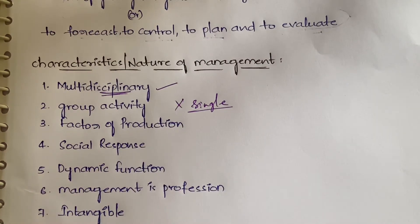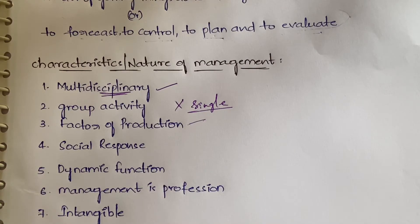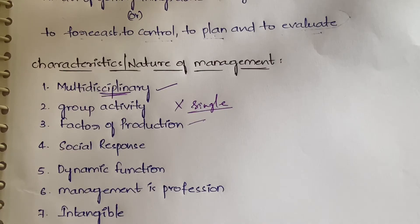Management is a group activity — one single person cannot manage all things. All managers and workers have to work together as a group. It is also a factor of production, just like labor, raw materials, and money. If you manage properly, only then will the outcome be perfect.